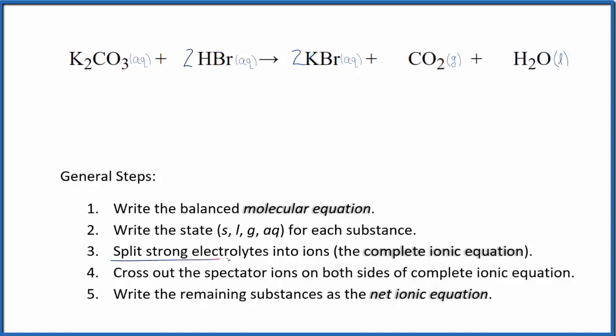Now we can split the strong electrolytes into their ions. That'll give us the complete ionic equation. Potassium is in group 1 on the periodic table, so that's going to be 1 plus. And then the carbonate, the whole thing, is 2 minus. So we'll have 2 potassium ions. I won't write the states right now; let's write those at the end. Plus, we have our carbonate ion, CO3 2 minus.